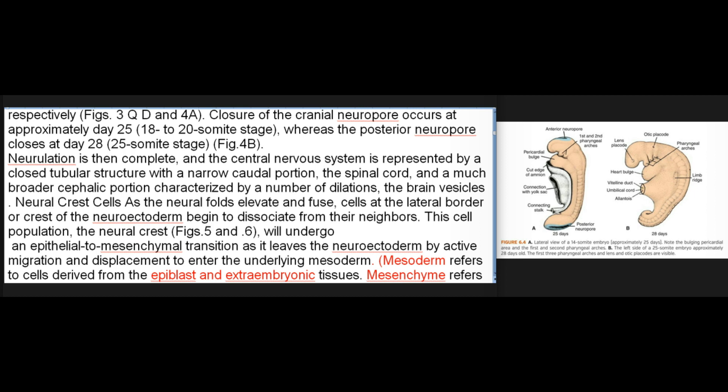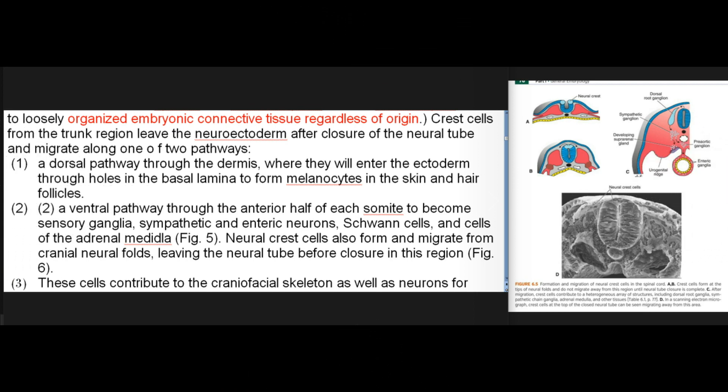Neural crest cells: As the neural folds elevate and fuse, cells at the lateral border or crest of the neuroectoderm begin to dissociate from their neighbors. This cell population, the neural crest, will undergo an epithelial-to-mesenchymal transition as it leaves the neuroectoderm by active migration and displacement to enter the underlying mesoderm. Crest cells from the trunk region leave the neuroectoderm after closure of the neural tube and migrate along two pathways: (1) a dorsal pathway through the dermis, where they enter the ectoderm to form melanocytes in the skin and hair follicles; (2) a ventral pathway through the anterior half of each somite to become sensory ganglia, sympathetic and enteric neurons, Schwann cells, and cells of the adrenal medulla.